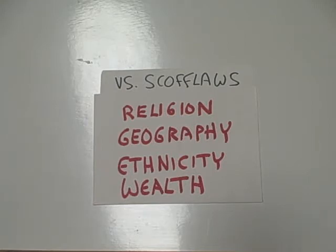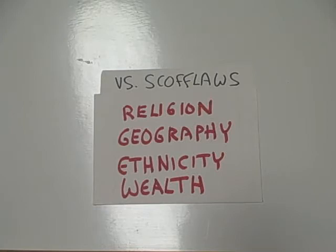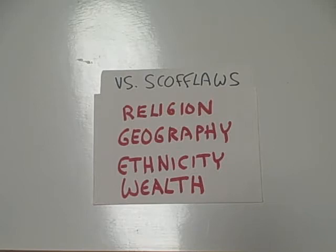Unfortunately, there are other confounding variables separating those who break the one-child policy from those who adhere to it. For example, there are religious differences — people who tend to have more than one child tend to be more religious in China. Geography also plays a role: urban dwellers versus those living in the far western provinces. And there would be differences in ethnicity — the Han Chinese versus the Uyghurs, for example — and also differences in wealth.